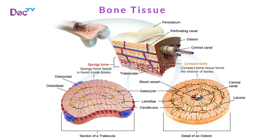Bone, or osseous tissue, is the hardest connective tissue with a rigid matrix of collagen fibers formed by osteoblasts, which also deposit calcium salts. Mature bone cells called osteocytes lie within spaces called lacunae. This structure allows bone to support the body, provide levers for muscle actions, store calcium and other minerals and fat, and synthesize blood cells in the marrow. Bones are composed of an exterior layer of compact bone tissue surrounding internal spongy bone tissue. Compact bone consists of structural units called osteons arranged to resist torque, while spongy bone consists of a lattice-like network of flat pieces called trabeculae with spaces filled with red bone marrow.